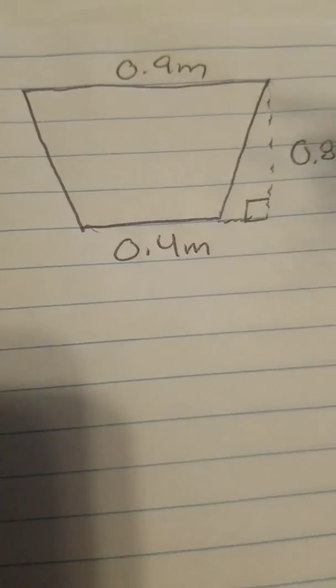Remember when you're getting area of trapezoids, your bases are always the two lines that are going to run parallel to each other, the two flat sides that are never going to intersect.